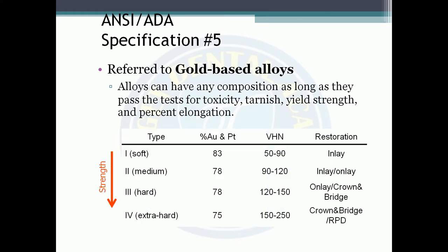An important MCQ from the AIIMS exam: 'According to ADA specification number 5, the gold alloy used for casting contains...' The answer is 75% of precious metal. According to ADA specification number 5, the gold alloy used for casting contains 75% of precious metal.